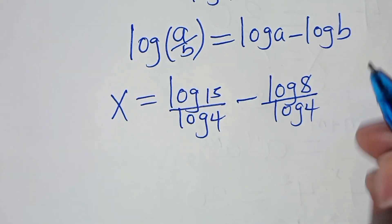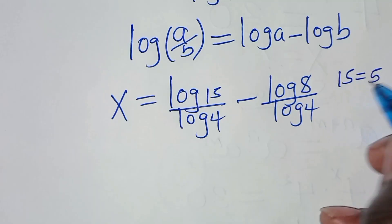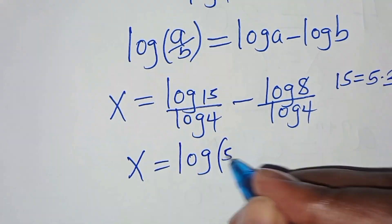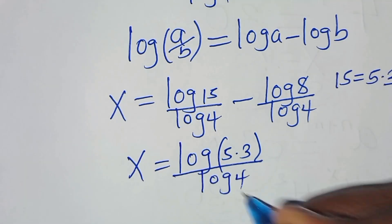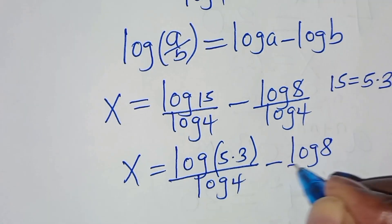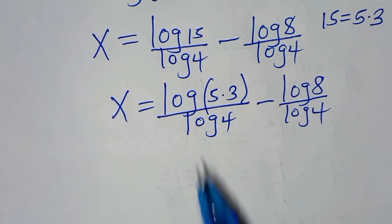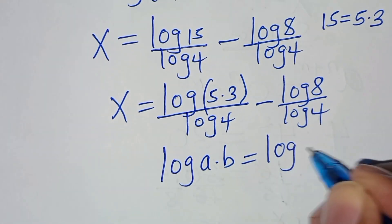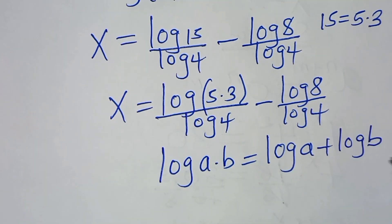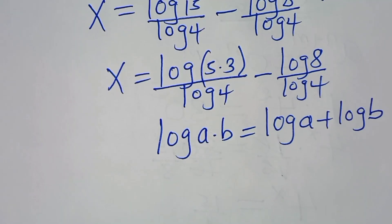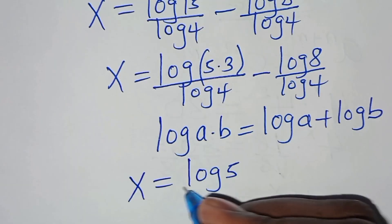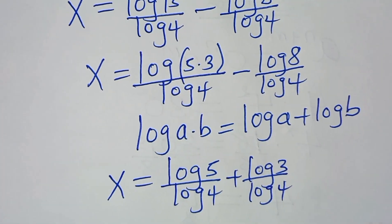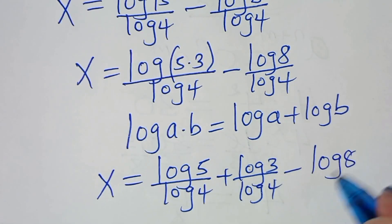The next step: we can express 15 as 5 multiplied by 3. So substituting this, we have log(5 times 3) divided by log 4, subtract log 8 divided by log 4. Now log(5 times 3) is in the form of log(a times b), which we can express as log a plus log b. Applying this property, x equals log 5 divided by log 4, plus log 3 divided by log 4, then subtract log 8 divided by log 4.